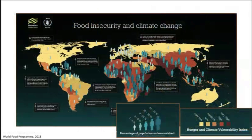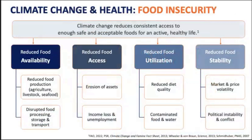Turning to food insecurity: the regions with the highest prevalence of hunger — sub-Saharan Africa, South America, and Southeast Asia — are also most vulnerable to climate threats. Climate change negatively impacts all aspects of food insecurity: it affects food availability because drought, high temperatures, and heavy rains can contribute to crop loss, animal death, and migration of fish. We see reduced food access through economic impacts like income loss and unemployment, reduced food utilization through reduced diet quality and food and water contamination, and compromised food system stability through market volatility, rising food prices, and political instability.